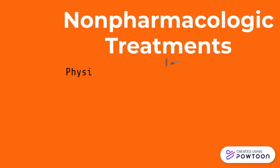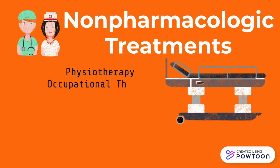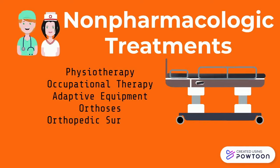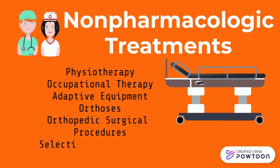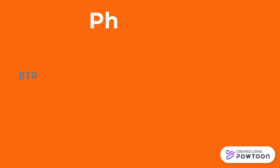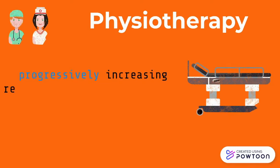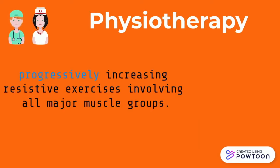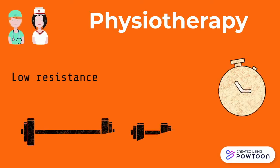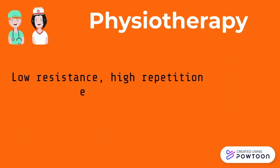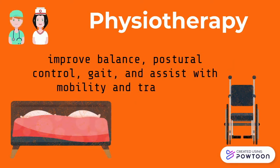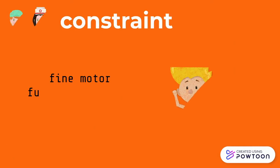Non-pharmacologic treatments also exist. Examples range from physiotherapy, occupational therapy, use of adaptive equipment and orthoses, orthopedic surgical procedures, and surgery that removes problematic nerve roots in the spinal cord. Physiotherapy helps by enhancing muscle strength, endurance, joint flexibility, and preventing joint problems. It involves regular resistance exercises to make muscles stronger and high-repetition exercises to improve endurance. Specific exercises also target balance, posture, walking, and movement from one place to another, like from a bed to a wheelchair.